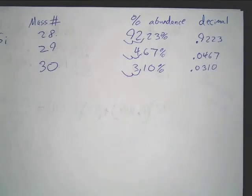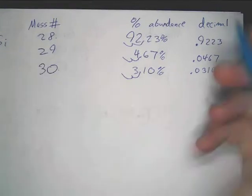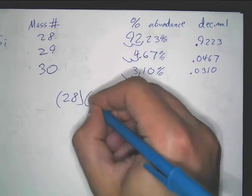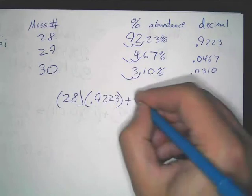Now, do not round those, okay? Don't round those. Only round it once you get your final answer. So these are our decimals. We know our mass number, so all you do, you take 28, multiply it by your decimal percentage there, add it to 29.